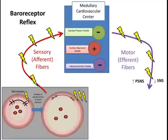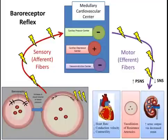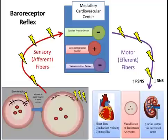Efferent fibers then travel via the autonomic nervous system, leading to the heart and blood vessels. The cardiovascular system initiates reflexes by increasing the parasympathetic drive and decreasing the sympathetic drive. The net effect of these actions is to decrease cardiac output, vasodilate the resistant blood vessels, and increase urine production. Consequently, the blood pressure will begin to drop, and the baroreceptors will decrease their frequency of action potentials.